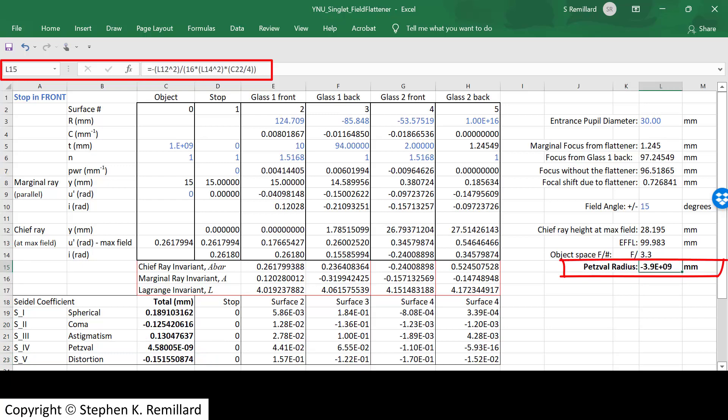Petzval radius then is computed. And it's minus 3.9 times 10 to the ninth millimeters, which is a pretty long ways. So the Petzval radius has come out to be infinity, as you would expect at the point where you get S sub 4 to be 0. You can use this spreadsheet to test for sensitivity because this number of significant figures is not realistic.